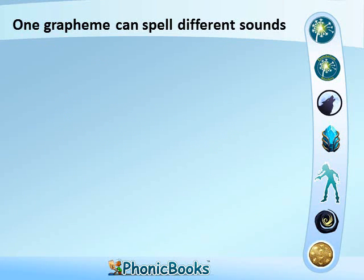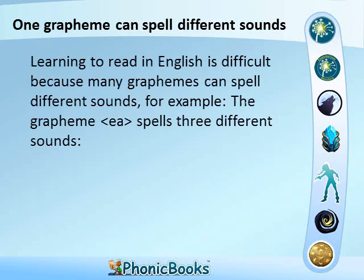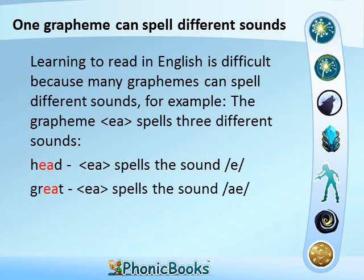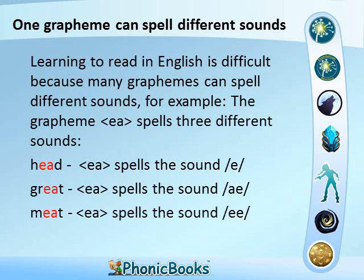One grapheme can spell different sounds. Learning to read in English is difficult because many graphemes can spell different sounds. For example, the grapheme EA spells three different sounds: in the word 'head', EA spells the sound E; in the word 'great', EA spells the sound A; in the word 'meet', EA spells the sound E.